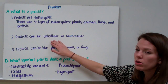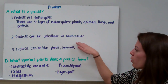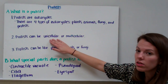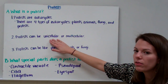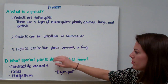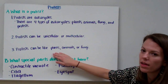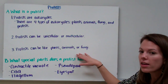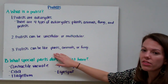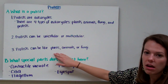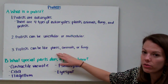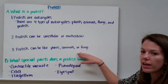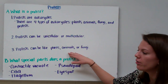Protists can be unicellular or multicellular, though they're usually unicellular, meaning they're usually made of one cell. Protists can be like plants, animals, or fungi. Some protists get their energy from the sun and make their own food, while some protists eat their food like animals and fungi do.